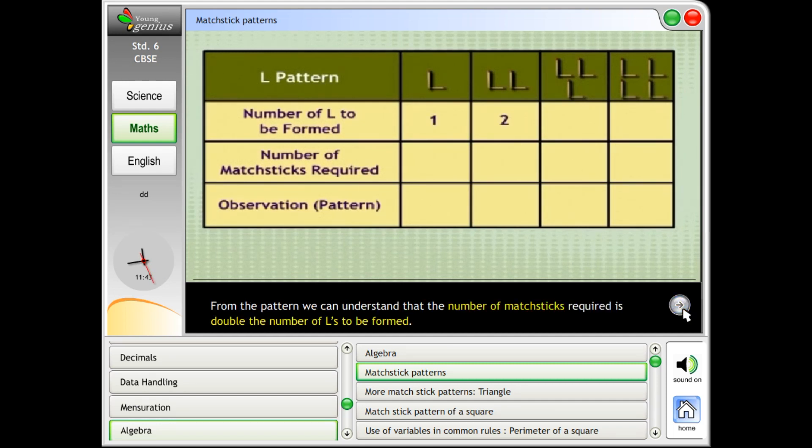From the pattern, we can understand that the number of matchsticks required is double the number of L's to be formed. That is, number of matchsticks required equals two times number of L's.